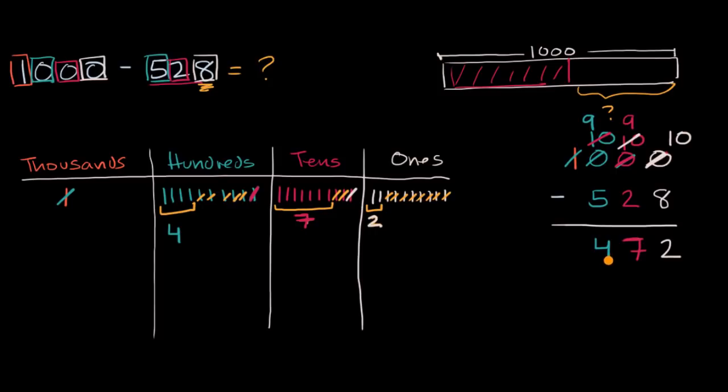And so there you get the general idea. With the standard method, it sometimes seems like magic of how we're regrouping things. But all we're doing is we're taking that thousand and saying, hey, that's 10 hundreds. And then we take one of those hundreds and we say, hey, that's 10 tens. And then we take one of those tens and we say, that's 10 ones. And then we are able to subtract.